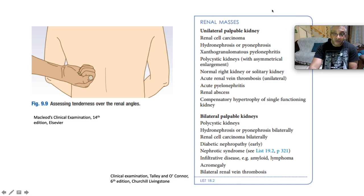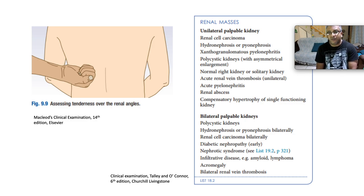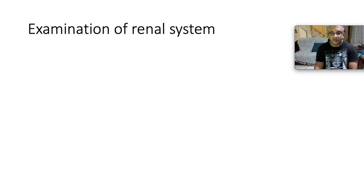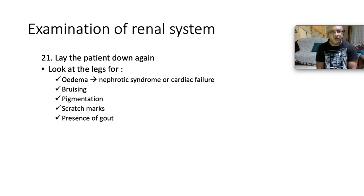If you find a large renal mass, differentials for a unilateral palpable kidney include renal cell carcinoma, unilateral hydronephrosis or pyonephrosis, polycystic kidneys with asymmetrical enlargement, acute renal vein thrombosis, acute pyelonephritis, renal abscess, or compensatory hypertrophy of a single functional kidney. Bilateral palpable kidneys may indicate adult polycystic kidney disease, bilateral hydronephrosis, renal cell carcinoma, diabetic nephropathy, nephrotic syndrome, infiltrative disease such as amyloidosis or lymphoma, acromegaly, or bilateral renal vein thrombosis.